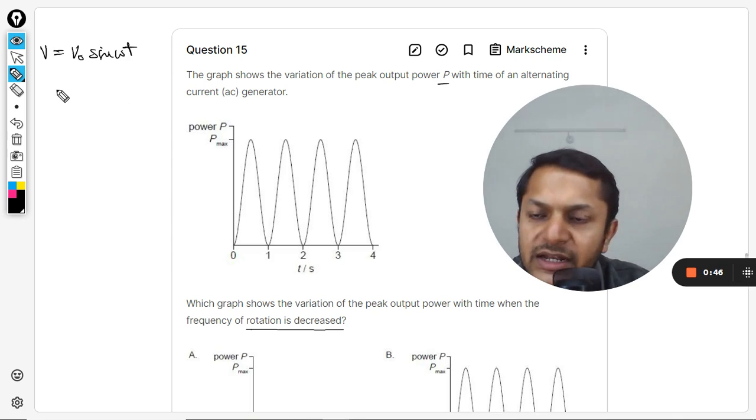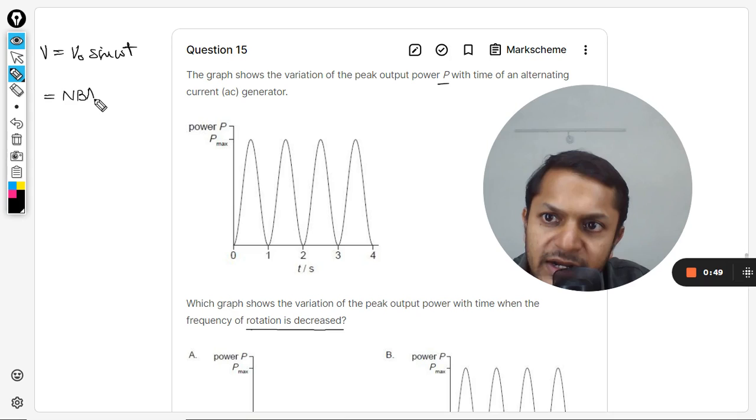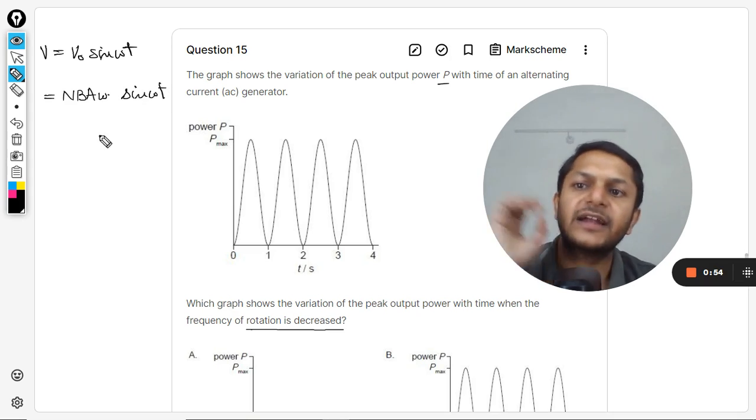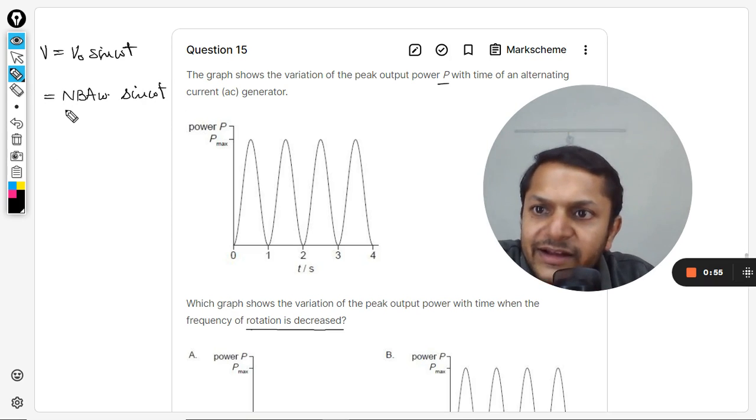V is the voltage difference and that is V naught sine omega t. And the V naught value, if you remember, it is NBΑω sine omega t like that. So this is V, clearly the amplitude.